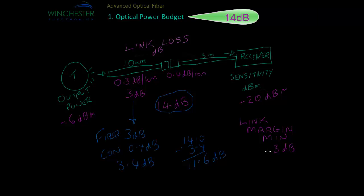Now remember, we were looking for a minimum of 3 dB, and we have 11.6 dB. So this means we have over 11 dB of link margin. This could be used for installing extra connectors, putting in more fibre, or just maintaining this as a safety margin, just in case the connectors get dirty or there's some degradation in the transmitters or receivers.